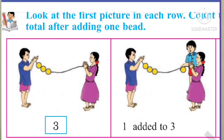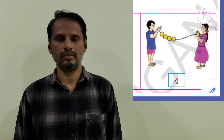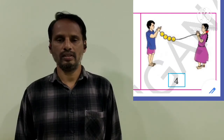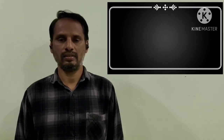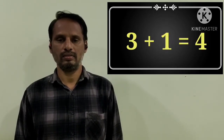A boy is adding a bead to the chain. Next, the last box — after adding one bead. Children, can you say how many beads are there? Let's count: 1, 2, 3, 4. Yes, 4 beads are there. What did you observe here? 3 plus 1 equal to 4.